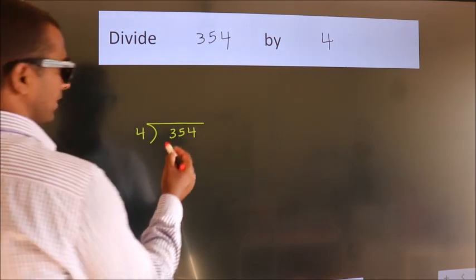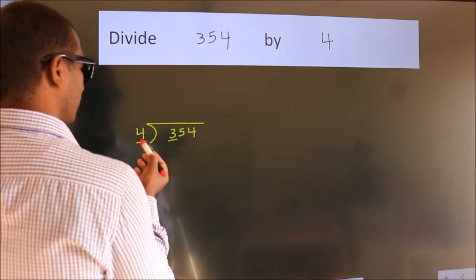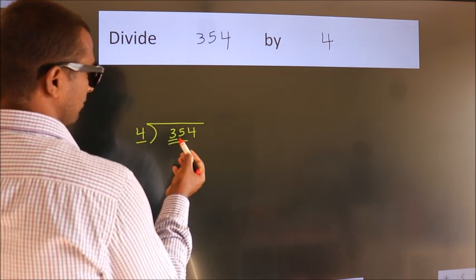Next. Here we have 3, here 4. 3 is smaller than 4. So we should take two numbers, 35.